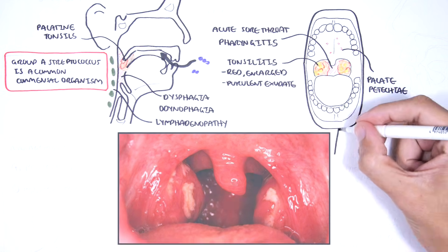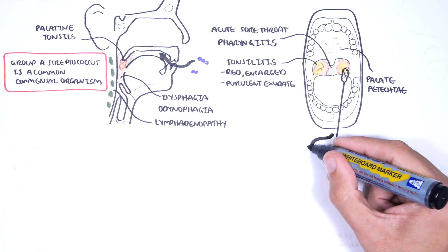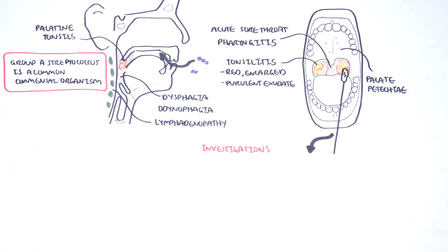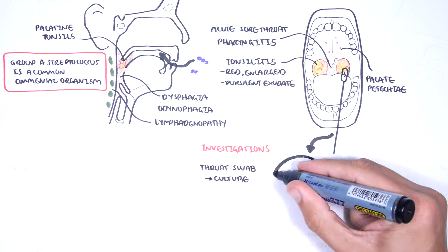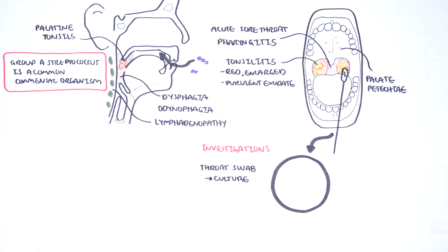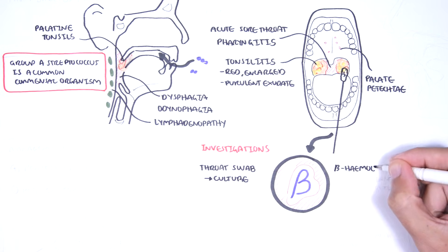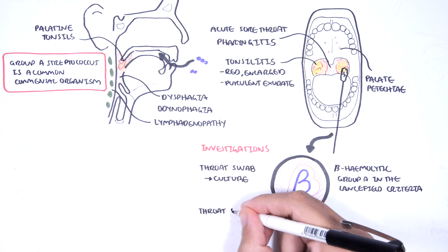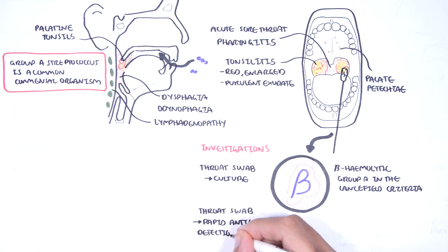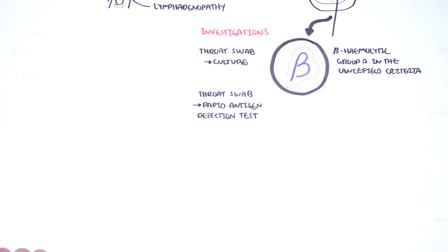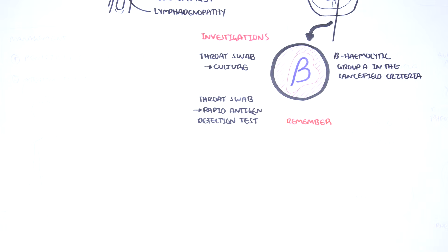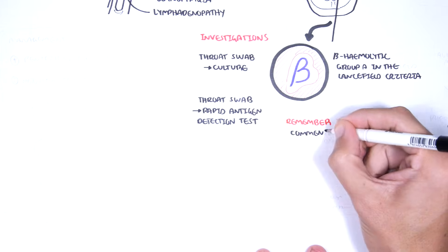A throat swab can be performed. A throat swab with microscopic culture sensitivity in blood agar will help diagnose Group A Streptococcus because it will show a beta hemolytic cocci. The throat swab for rapid antigen detection tests, RADT can also be used. In general though, throat swabs are not very useful because remember, Group A Streptococcus are commensal organisms in many patients.